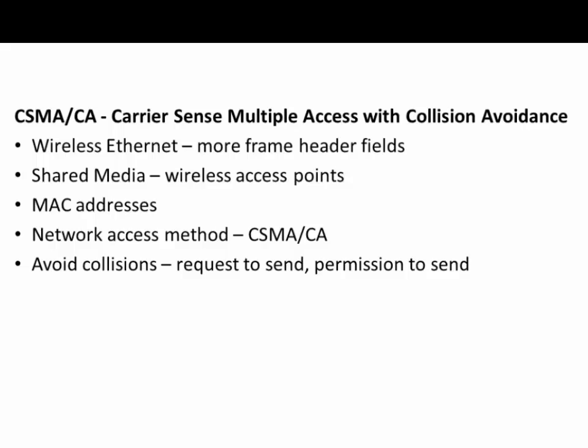In wireless Ethernet, we also use MAC addresses to identify host computers on the network. The network access method is CSMA/CA. The goal with CSMA/CA, the way it differentiates from CD, is collision avoidance — the need to avoid collisions. In CSMA/CA, devices need to request to send, and then get permission to send before they can send. The wireless access point handles this, acting like a traffic cop that needs to give permission before you can send.